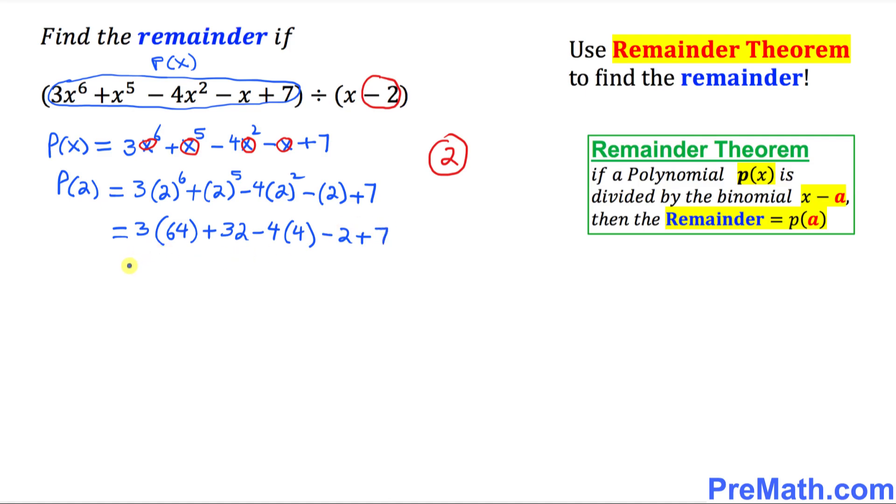Let's simplify further. 3 times 64 is 192. So we have: 192 + 32 - 16 - 2 + 7.